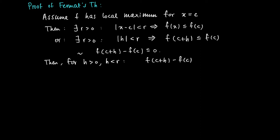And we look at the quotient, we divide f(c+h) minus f(c) by h, which is still smaller or equal than 0, since we divide something that is non-positive by something positive, which again returns a non-positive number.